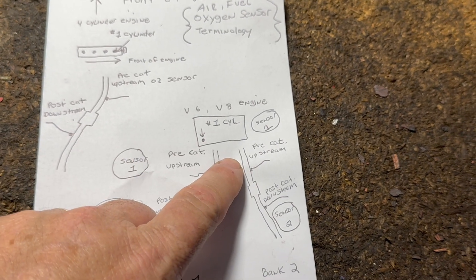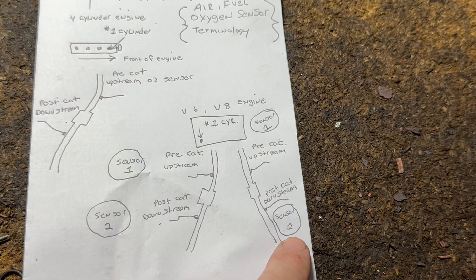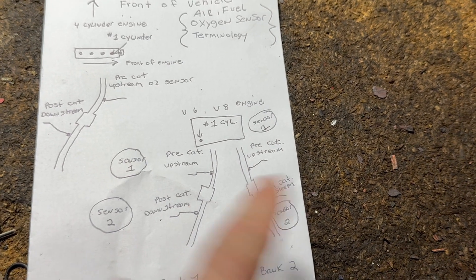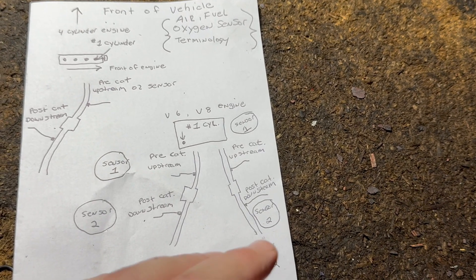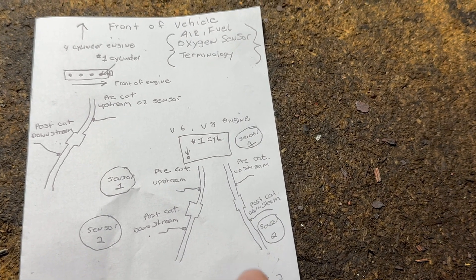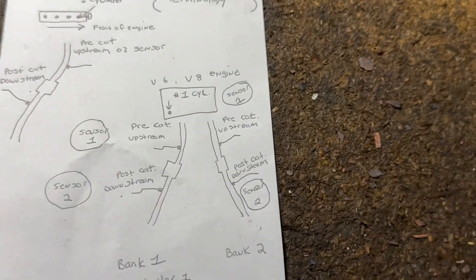Okay, we all know this is bank one. This is bank two, upstream is one. Sensor two would be the one that's all these names, post cat, downstream sensor two. Okay, on bank two. So hopefully that clears it up.